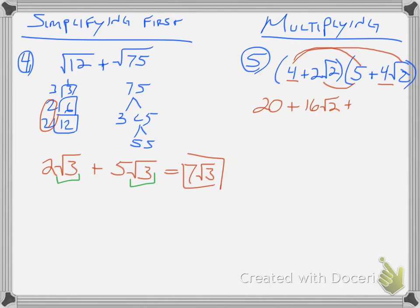Next, 5 times 2 square root of 2 — I can only multiply the 5 with the 2 on the outside — giving 10 square root of 2. Then 2 square root of 2 times 4 square root of 2: multiply the 2 and 4 on the outside to get 8, and multiply the 2 and 2 on the inside to get 4. Now I look to simplify. The 20 can't combine yet. The 16 square root of 2 and 10 square root of 2 are like terms — both square root of 2 — so they combine: 16 plus 10 gives 26 square root of 2.